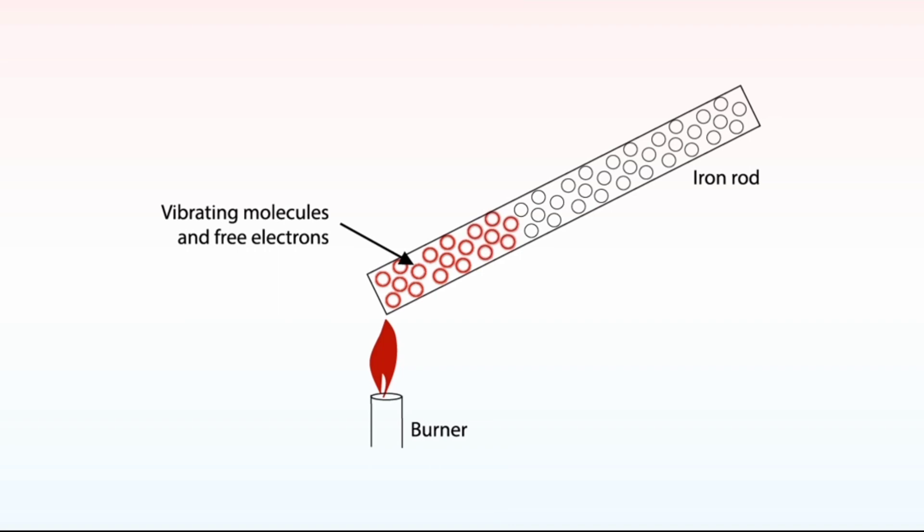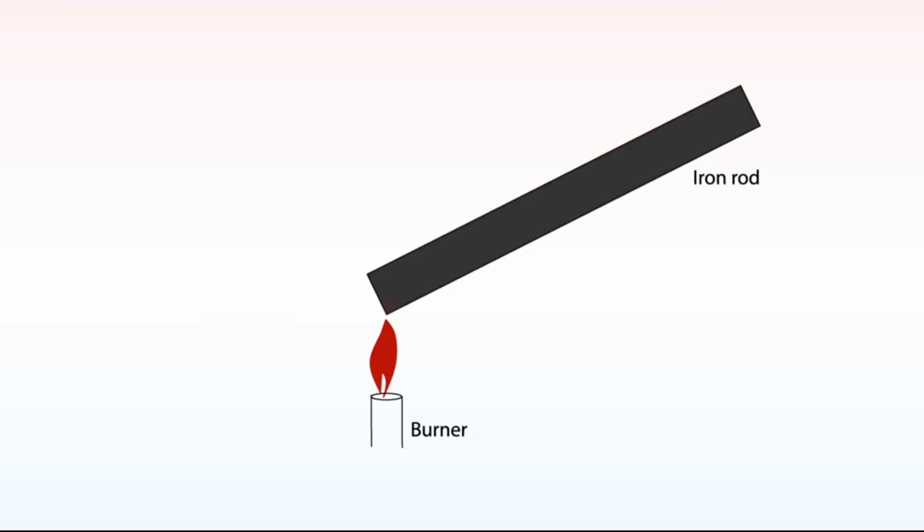Each molecule transfers some of its kinetic energy to its neighboring molecule during collision, making them also vibrate faster. These neighboring molecules also transfer kinetic energy to the next neighboring molecules.